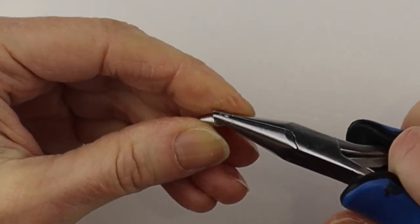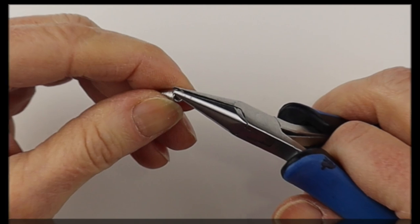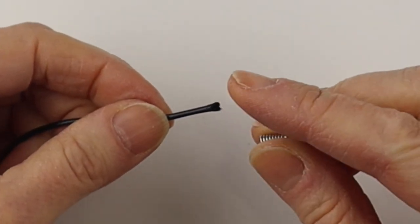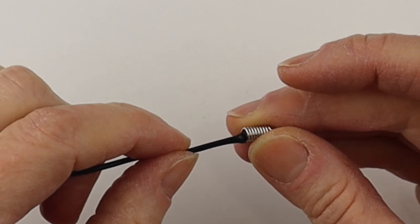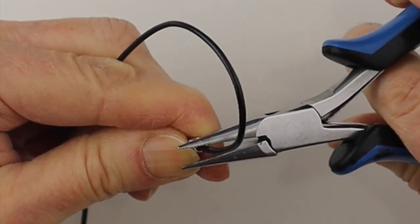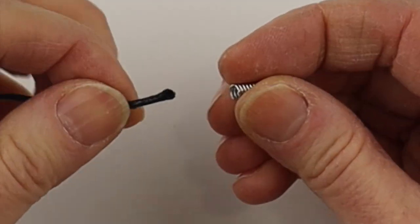So we'll take one of the springs, center the little loop, and then we'll open the loop. And we're going to put the spring end on the cord. I would add some crazy glue to make sure it stays in place and pinch the end.